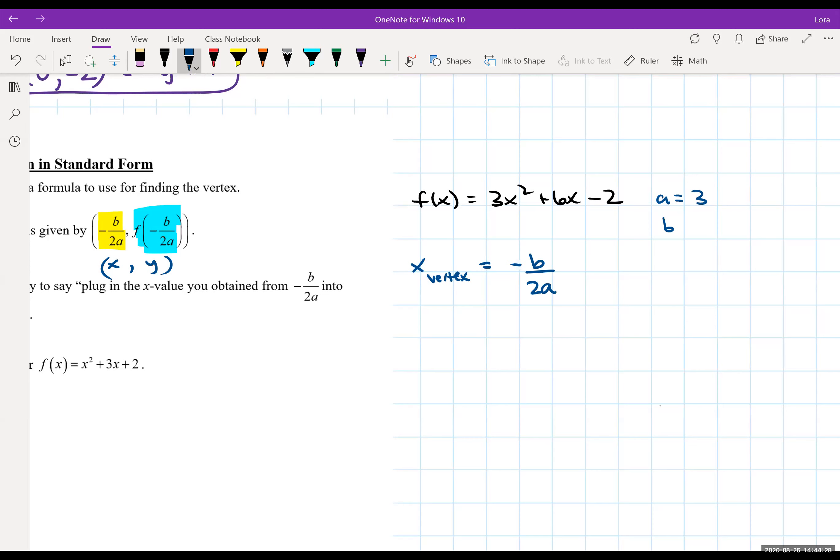3, b is equal to 6, and c is equal to negative 2. Now you don't have to have the c term but it's nice to kind of get in the habit. So all we do with the x value we're going to plug in. Instead of b we'll say 6. Instead of a we'll plug in 3. And we will compute